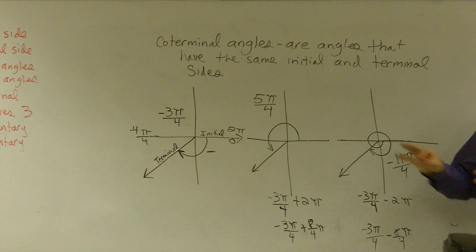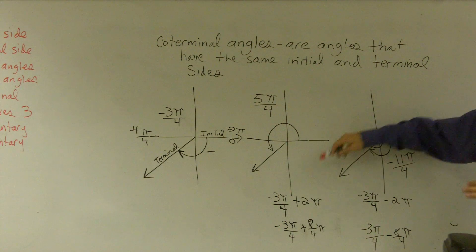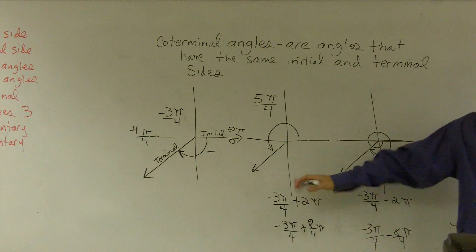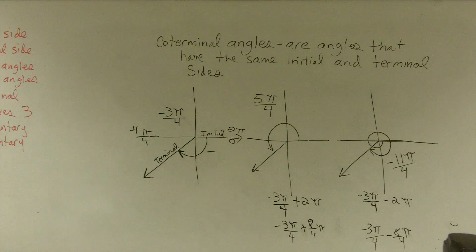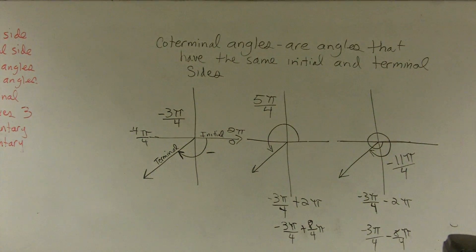you guys can just remember to write it down to find coterminal angles, add, subtract 2π. The hardest thing about this is dealing with those fractions. And remember what they are. Yes, you may. And that's it.